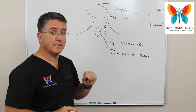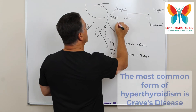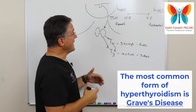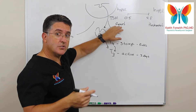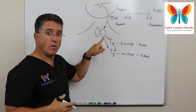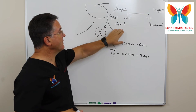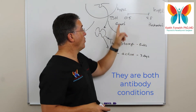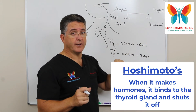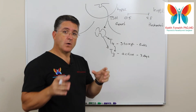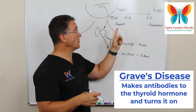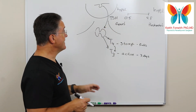The most common reason you might have hyperthyroidism is something called Graves' disease. Graves' disease is an autoantibody disease that causes the thyroid to overproduce thyroid hormone, and when you're overproducing the hormone, the TSH will fall. Both of these conditions are antibody conditions: Hashimoto's makes antibodies that bind to the thyroid gland and shut it off, while Graves' disease makes antibodies that turn it on — that's the most common reason to have an overactive thyroid gland.